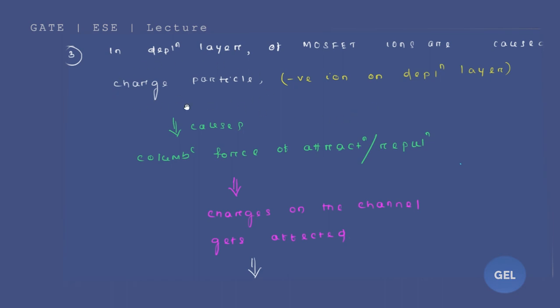And those charged particles will cause some columbic force of attraction or repulsion. I am repeating: as we have an n plus region and we have a p substrate here, there will be a formation of depletion layer in between.